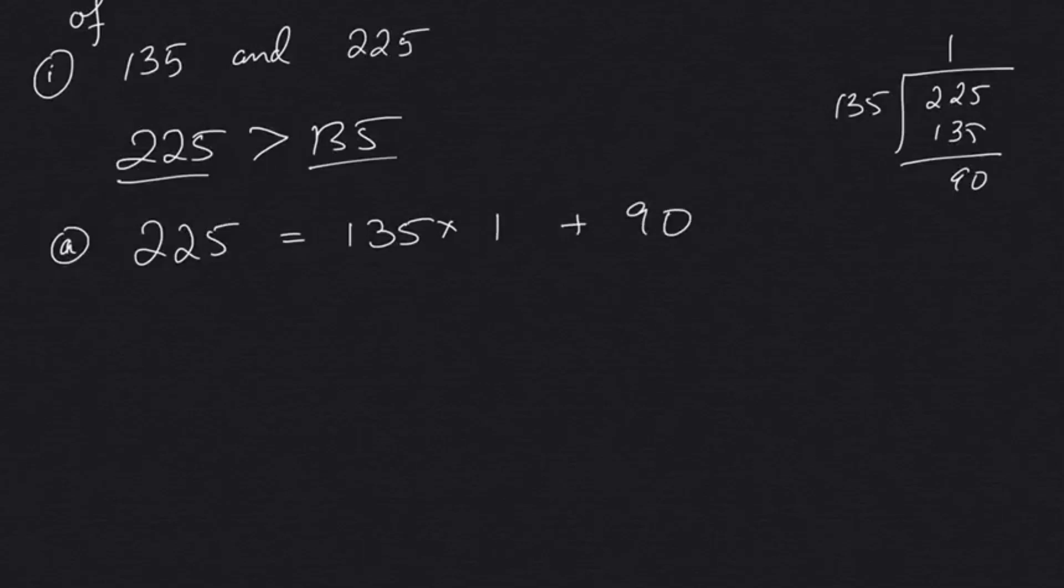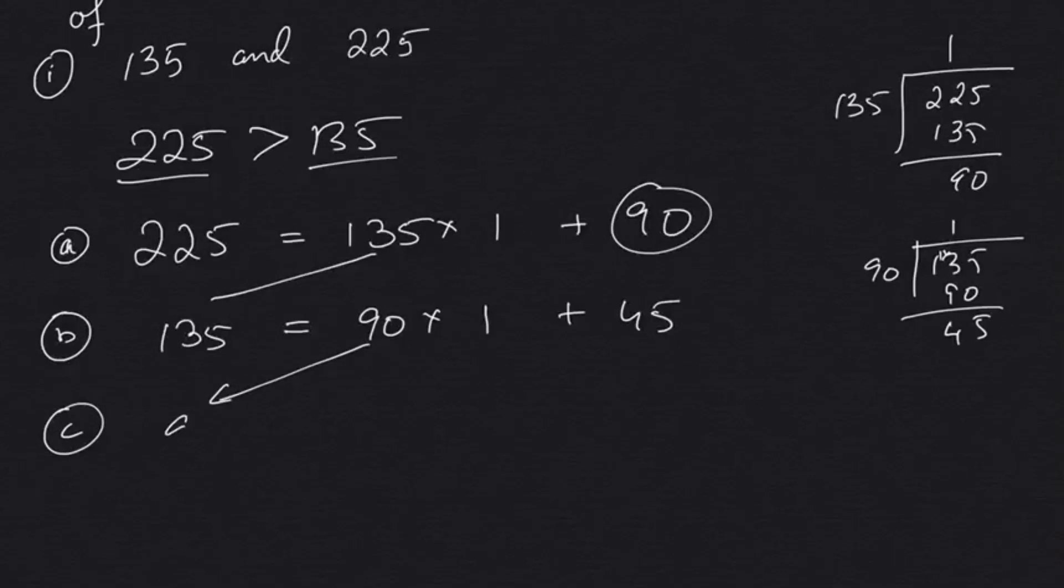In the second step, now we will continue with 135. So 135, now we will divide with 90. That is going to be 90 into 1 plus... so let's divide 135 by 90, 1 times 90 is 90, so the remainder is 45. Then we will continue with this again. Next, 90 will come down. We will divide 90 by 45. So we all know 90 is 45 into 2 plus 0.